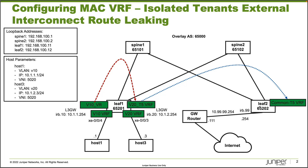If we were to configure T5 VRFs for the V10 VRF and the V20 VRF, Leaf 2 would need a one-to-one mapping of T5 VRFs. What we're getting away with here is configuring only one Common T5 VRF, which reduces the amount of configuration needed. Instead of having a V10 T5 VRF on Leaf 1 connecting into a V10 T5 VRF on Leaf 2 and separately a V20 T5 VRF, we only need one T5 VRF on Leaf 2. That saves a lot of time, especially when configuring many T5 VRFs.